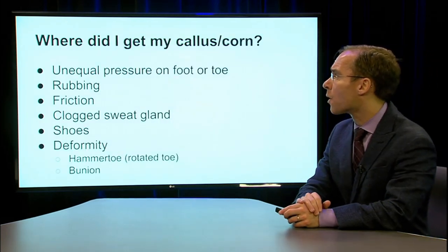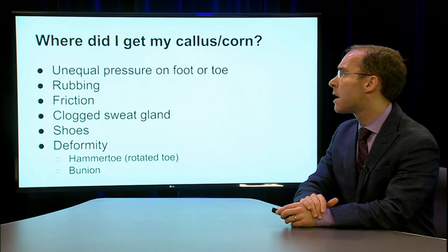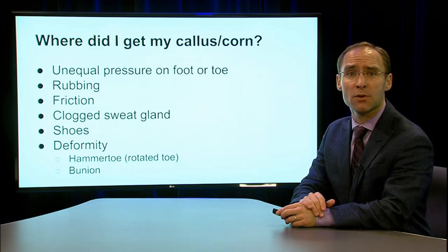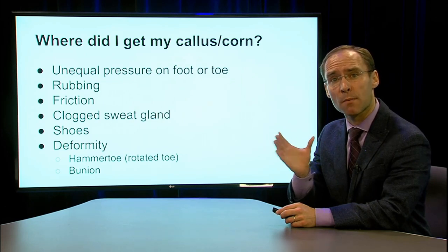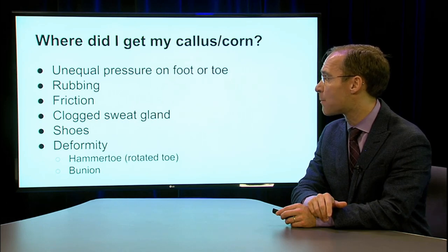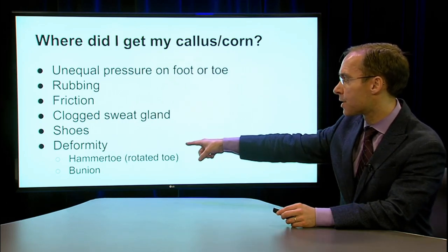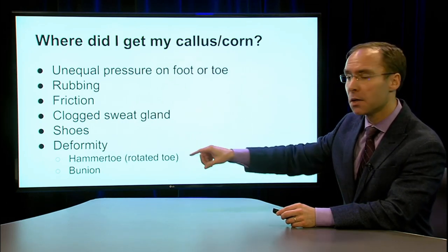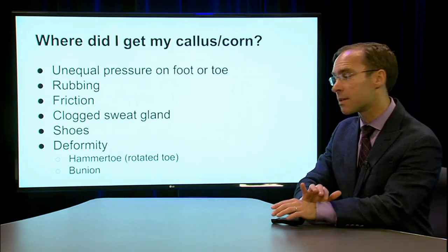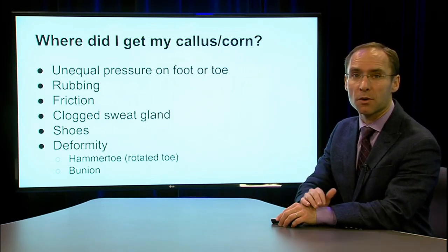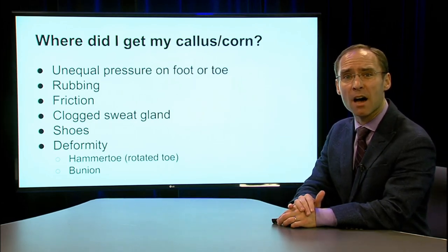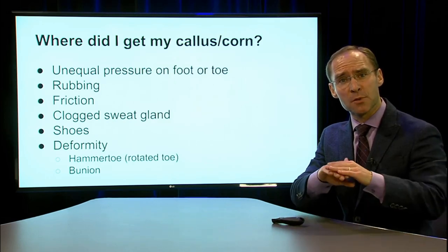Why do you get a callus or corn? First of all, there could be unequal pressure on the foot or toe. Unequal pressure can be caused by a tight shoe that rubs the sides or top of your foot. It can also be due to a bony abnormality or deformity, such as a hammer toe, a rotated fifth toe rubbing on the bottom, a bunion, or other conditions. Friction from rubbing is one of the main causes, especially on the tops of the toes.